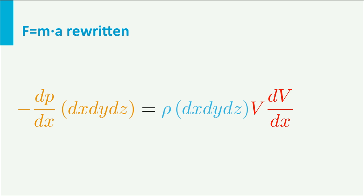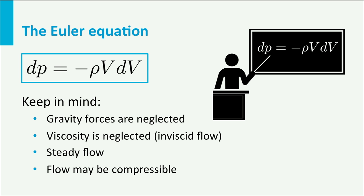Now if we put this all together we find minus dp over dx times dx dy dz equals rho dx dy dz times v times dv over dx. The volume is on both sides, so this cancels out. And finally we have found dp equals minus rho v dv.